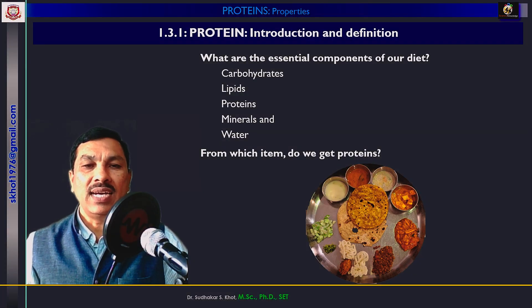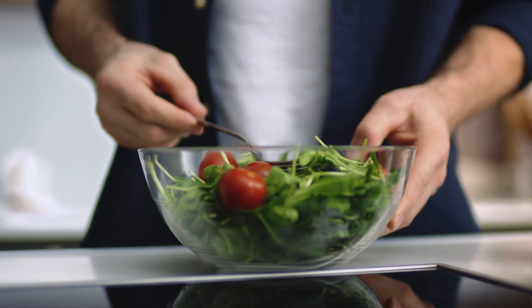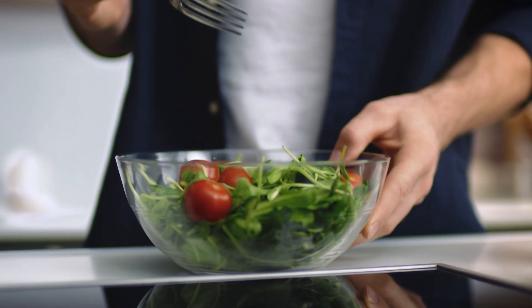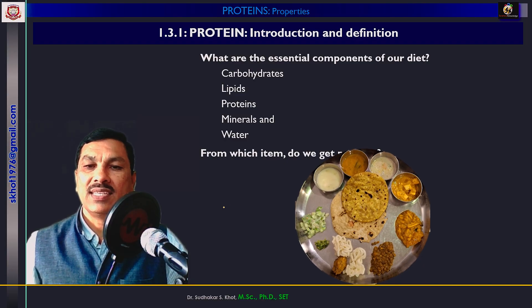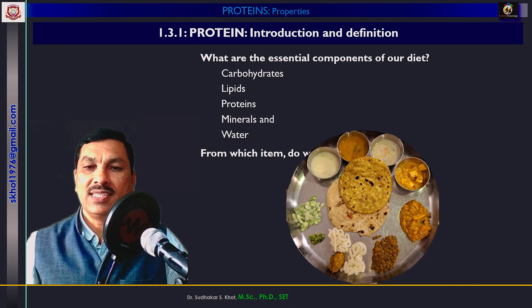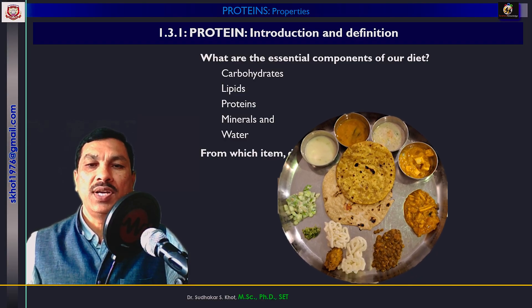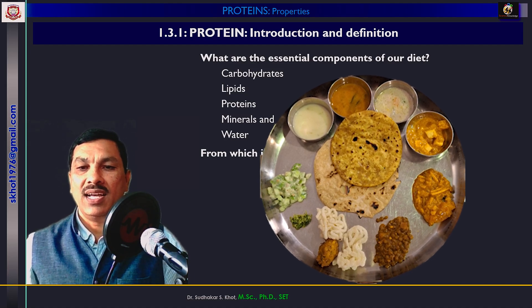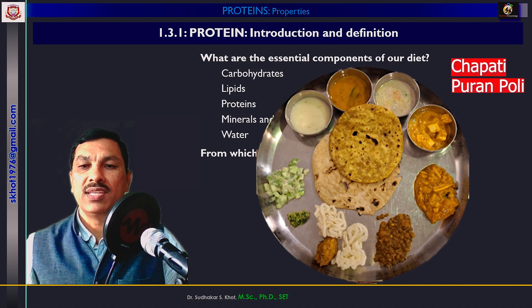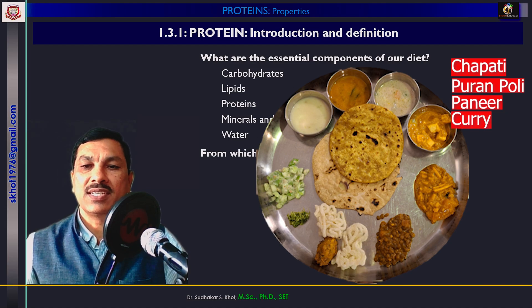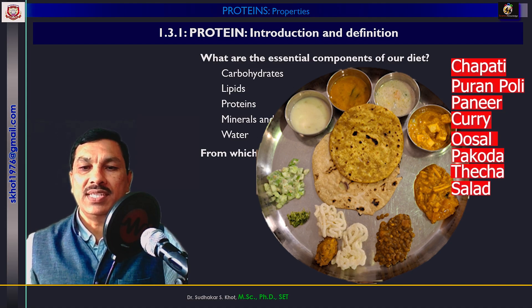Now in our diet, where do we get carbohydrates, lipids, proteins, and minerals? Here we can see that this is a pure Maharashtrian thali. Here we will get chapati, then this is a paneer, this is a kadhi, and various items are there.